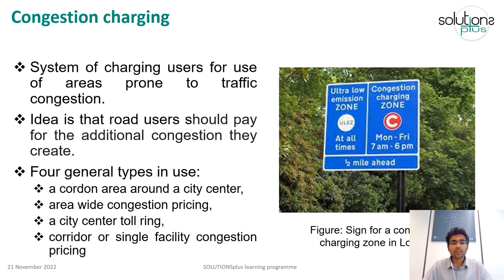The first type is cordon area pricing, where a charge applies to enter a restricted area, usually within or around a city center, to relieve traffic congestion. The second is area-wide congestion pricing, generally applied to an entire area and charging drivers using that specified peak demand area. The third is a city center toll ring, which collects charges from drivers at tolls surrounding the city. The final one is corridor or single facility congestion pricing, where road users pay a charge to access a specific lane or facility.